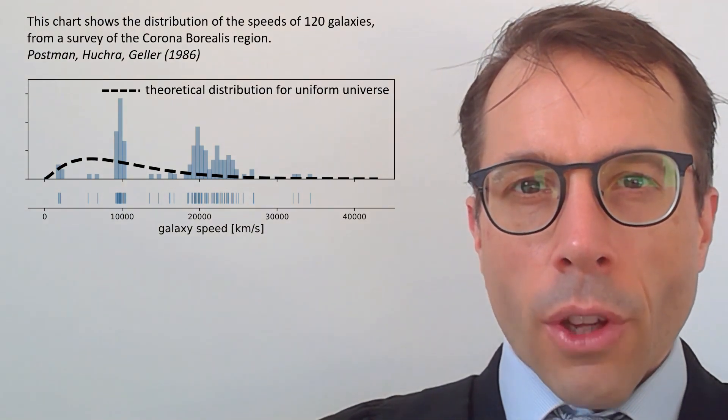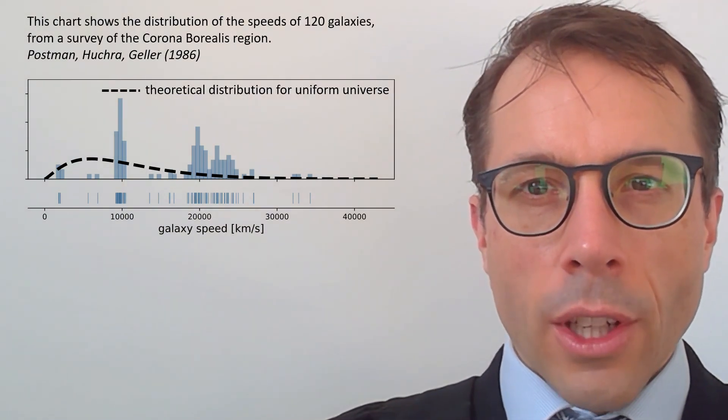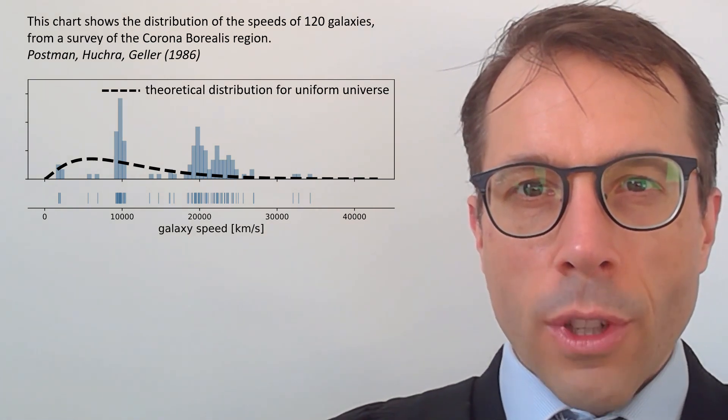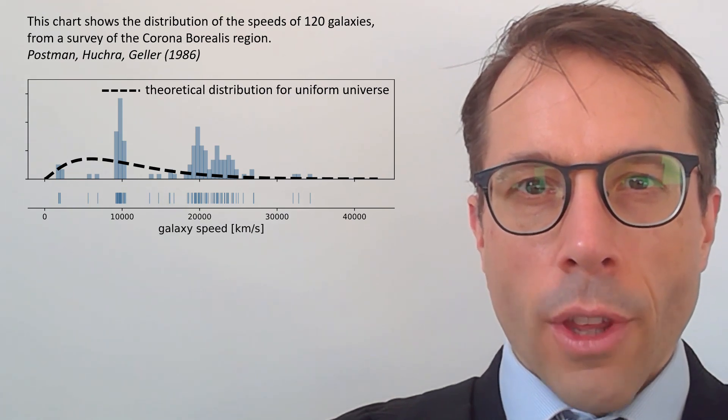Now if the universe were uniform with galaxies studded through it like cherries in a fruitcake, then we'd expect to see a smooth distribution of galaxy speeds, and this dashed black line shows that smooth distribution.